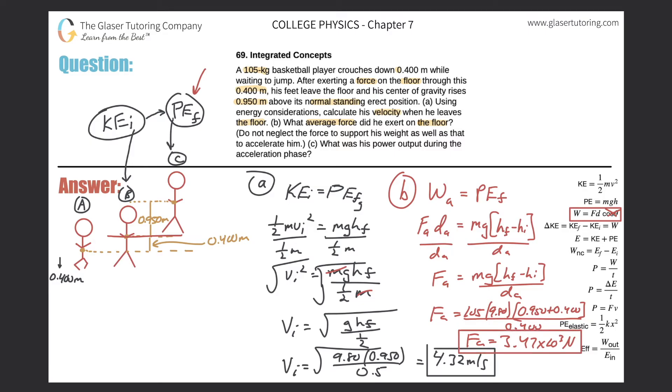So now for part C, let's take a look at the question. It says what was his power output during the acceleration phase? Basically we want to find the power output from point A to point B over which he's accelerating. Realize that we just found the average force, and we do know something about his velocities at these points as well. At part A his initial velocity was zero, and the final velocity at part B here just before he leaves the floor was 4.32 meters per second.